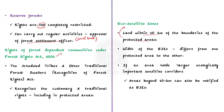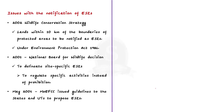The width of eco-sensitive zones differs from one protected area to another. However, as a general principle, the width is to be maintained at 10 kilometers around the protected areas. If any particular place holds larger ecologically important sensitive corridors, then areas beyond 10 kilometers can also be notified as eco-sensitive zones. The 2002 Wildlife Conservation Strategy envisaged lands within 10 kilometers of the boundaries of protected areas to be notified as ecologically fragile zones under the Environment Protection Act 1986. Then in 2005, the National Board for Wildlife decided to delineate site-specific eco-sensitive zones to regulate specific activities instead of prohibiting them.